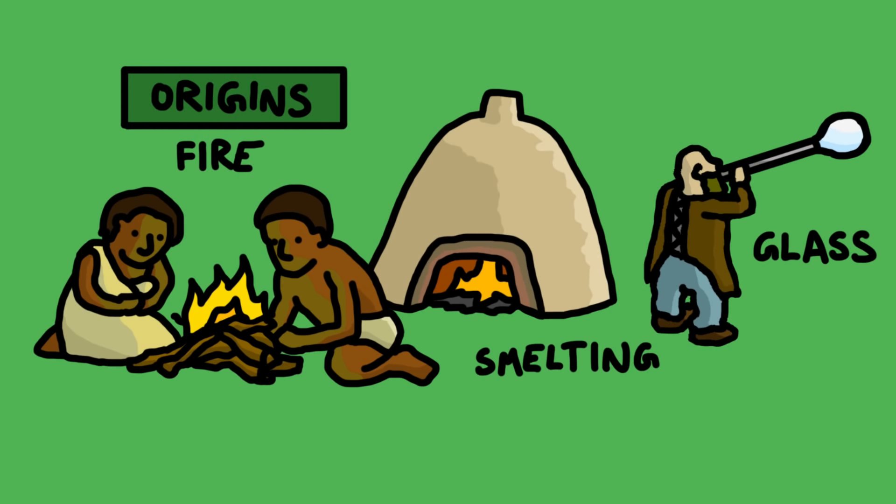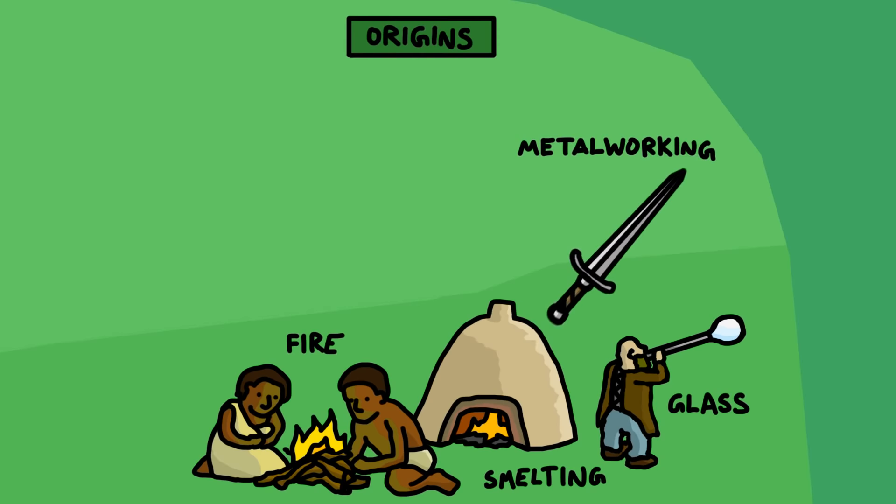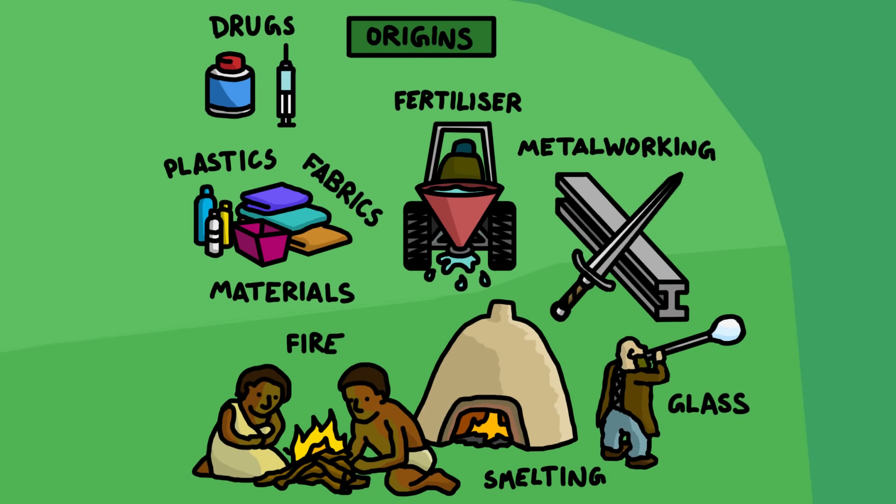Since then, many advances in human civilization have been built on the back of advances in chemistry, like metalworking or manufacturing fertilizer or making new materials and drugs. Let's look at what falls under the umbrella of chemistry.